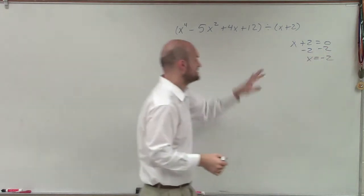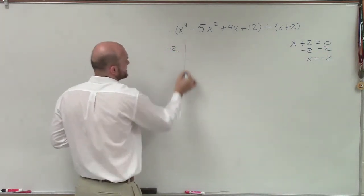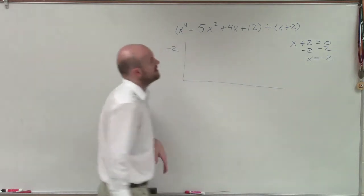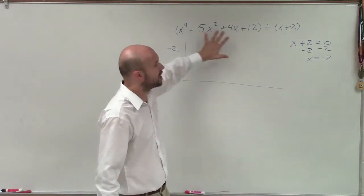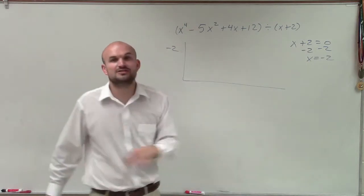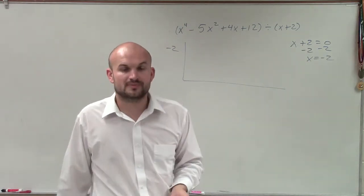So x equals negative 2. Then we take that negative 2 and we put it outside the nice little box that we have here. And then what we're going to do is now we're going to take our divisor, I'm sorry, our dividend, and we're going to take the coefficients of each one of our terms of our polynomial.